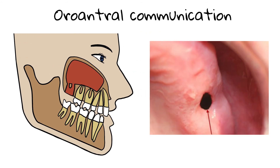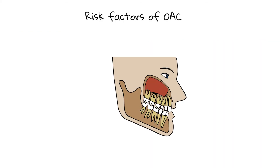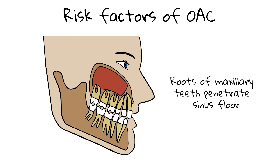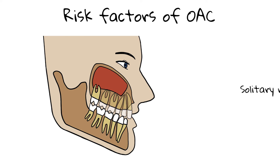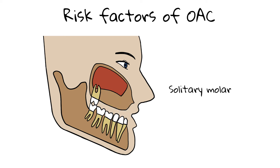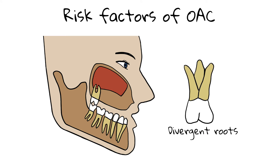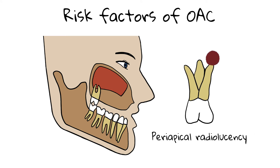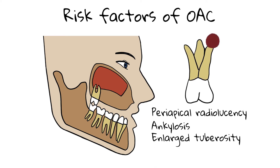If an OAC is untreated for 48 hours, it can epithelialize and turn into an oral antral fistula. To close a fistula, surgical treatment is needed. Risk factors of OAC include roots of posterior maxillary teeth that penetrate the sinus floor. There is increased risk if it's a solitary molar with sinus pneumatization, if the roots are divergent, and if there is a periapical radiolucency. Other risk factors include an enlarged tuberosity and ankylosis.